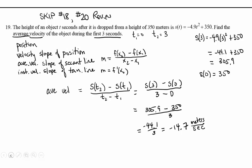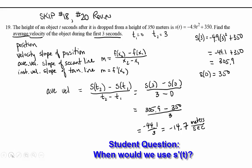an average speed of 14.7 meters per second in the negative downward direction. You would take the derivative of the position function if you wanted the instantaneous velocity formula.